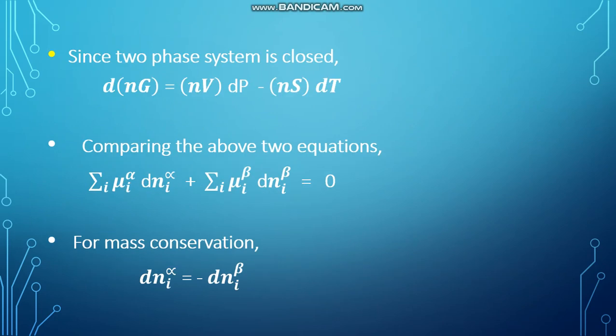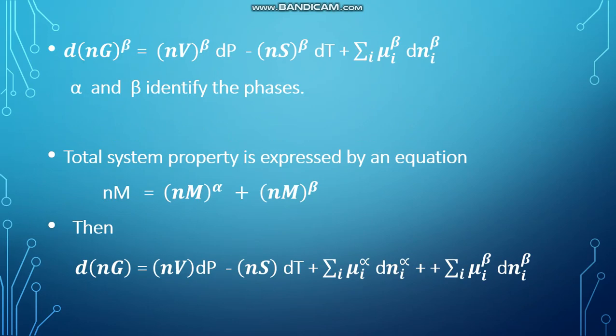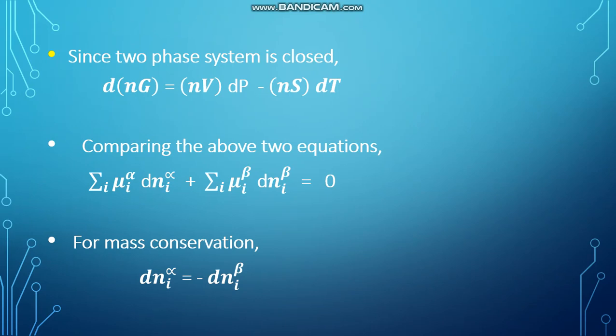Since the two phase system is a closed system, d(nG) = (nV) dP - (nS) dT. When we compare this equation and the above equation, we can write Σᵢ μᵢ^α dnᵢ^α + Σᵢ μᵢ^β dnᵢ^β = 0. For mass conservation, dnᵢ^α = -dnᵢ^β.